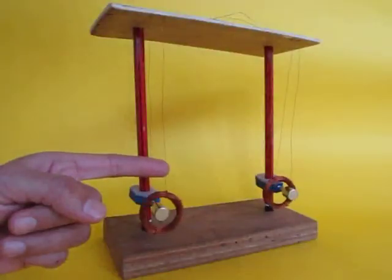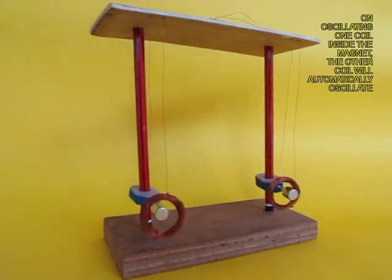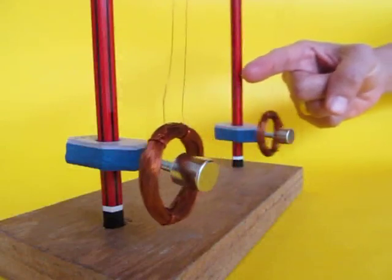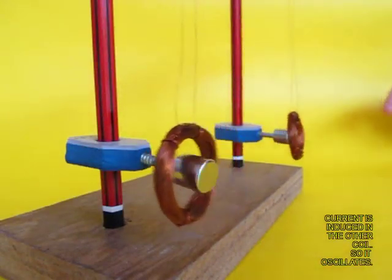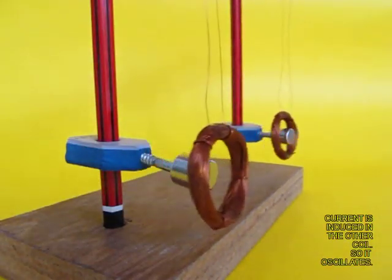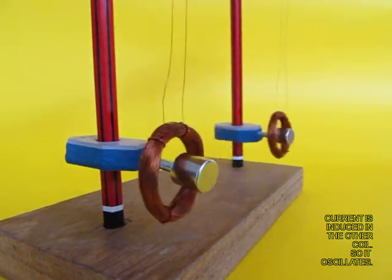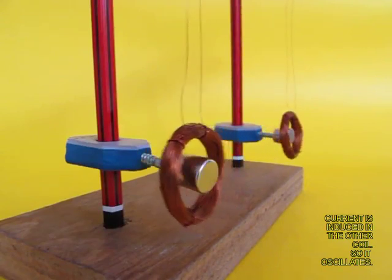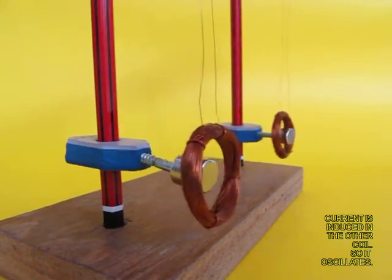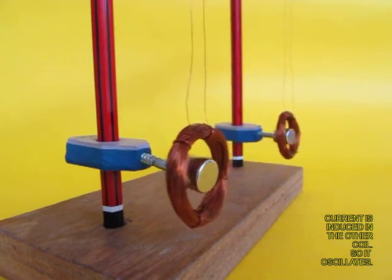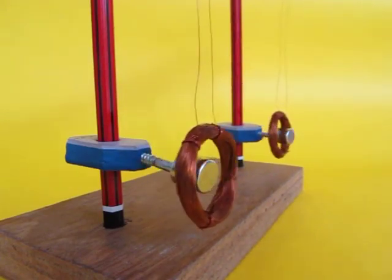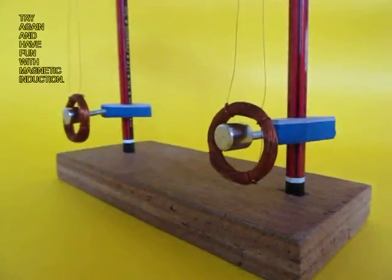Now just oscillate one coil and the other coil will also vibrate or oscillate in sympathy. Now this is not because of vibrations but because of induced current. When a coil vibrates inside the magnet there is a small EMF generated in this and this goes to the other coil, makes it magnetic, and this is attracted and repelled by the other magnet. So the other coil also starts to oscillate.